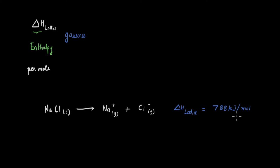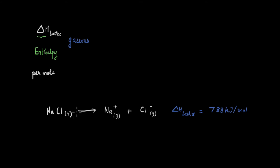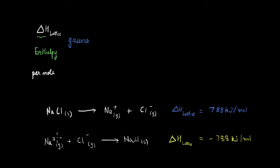The enthalpy here is positive because to break this ionic bond in NaCl we have to provide energy, so by sign convention the lattice enthalpy is positive. Sometimes in textbooks lattice enthalpy is defined for the reverse of this reaction — sodium and chloride ions forming NaCl — and because this is the reverse, the enthalpy is negative in that case.